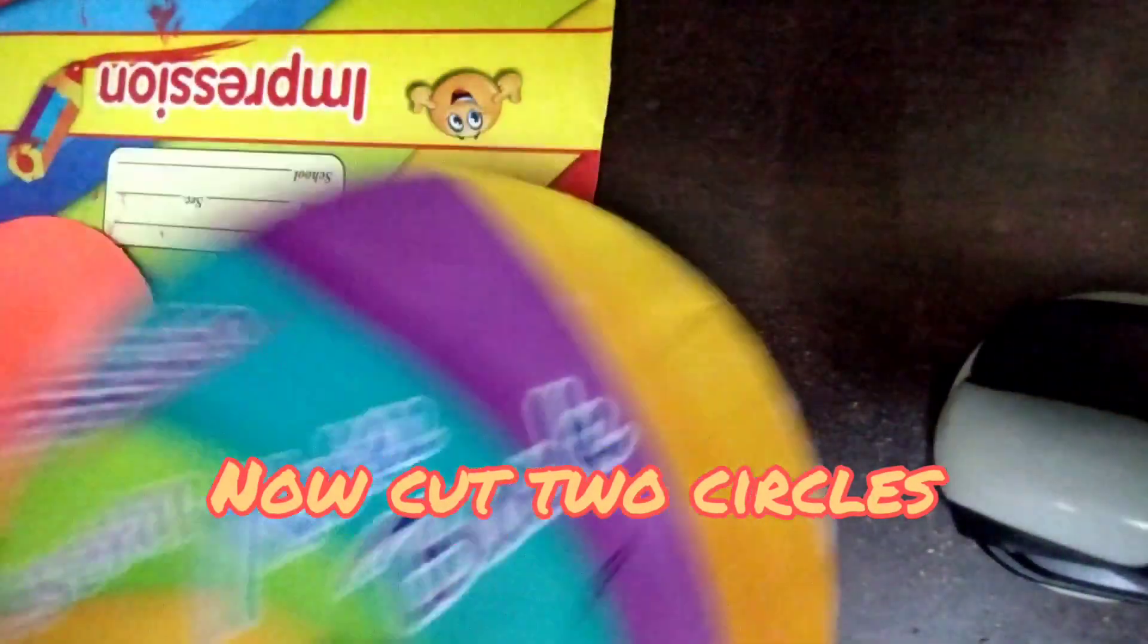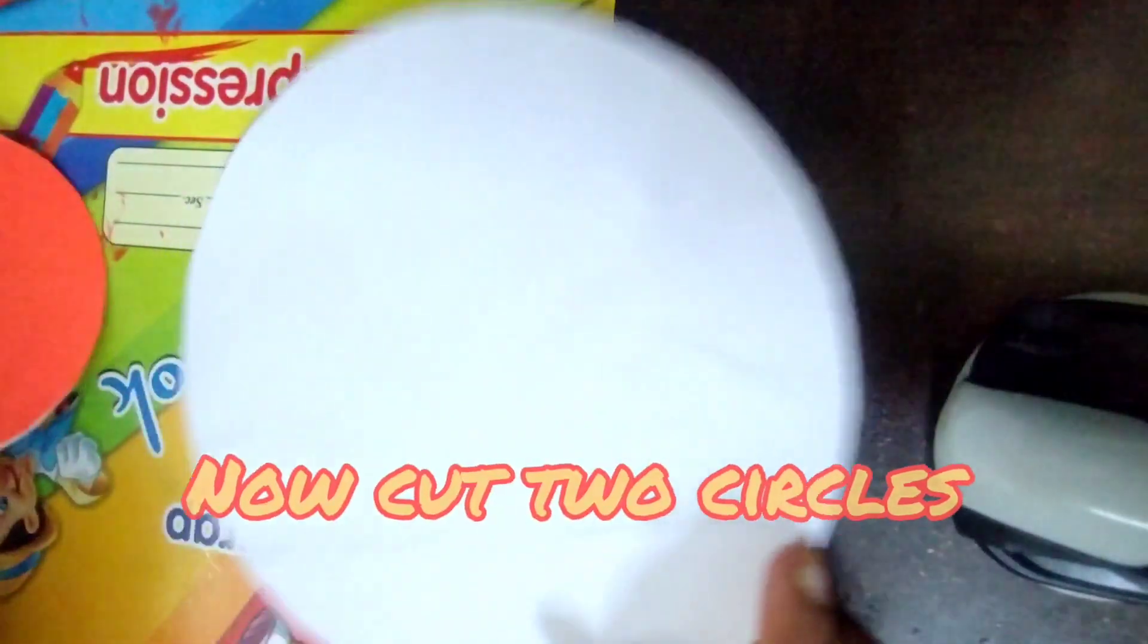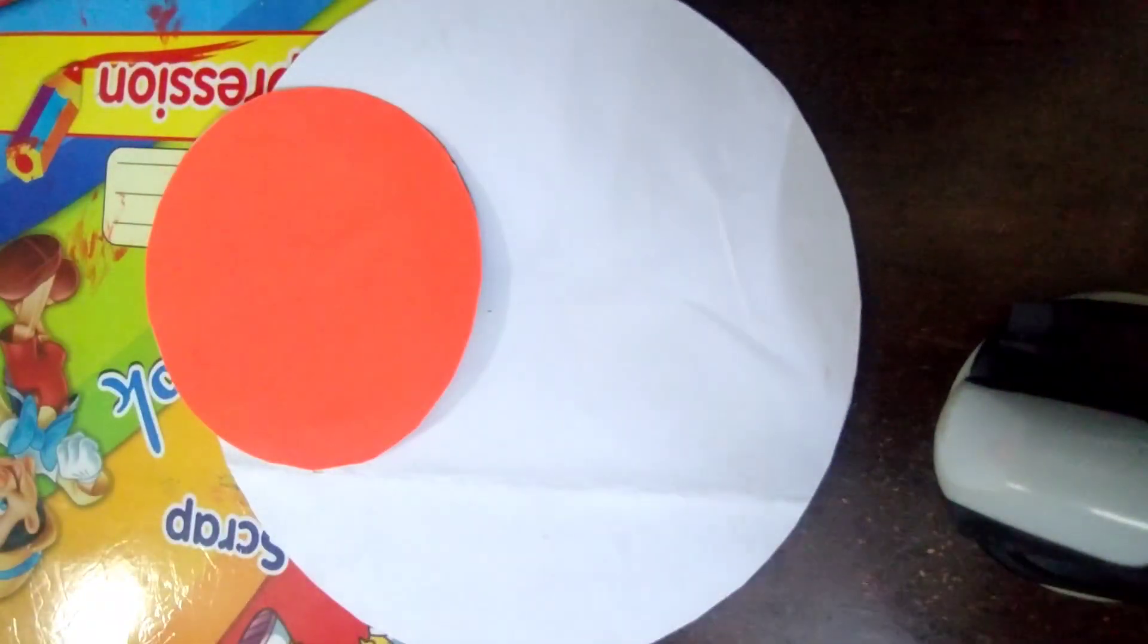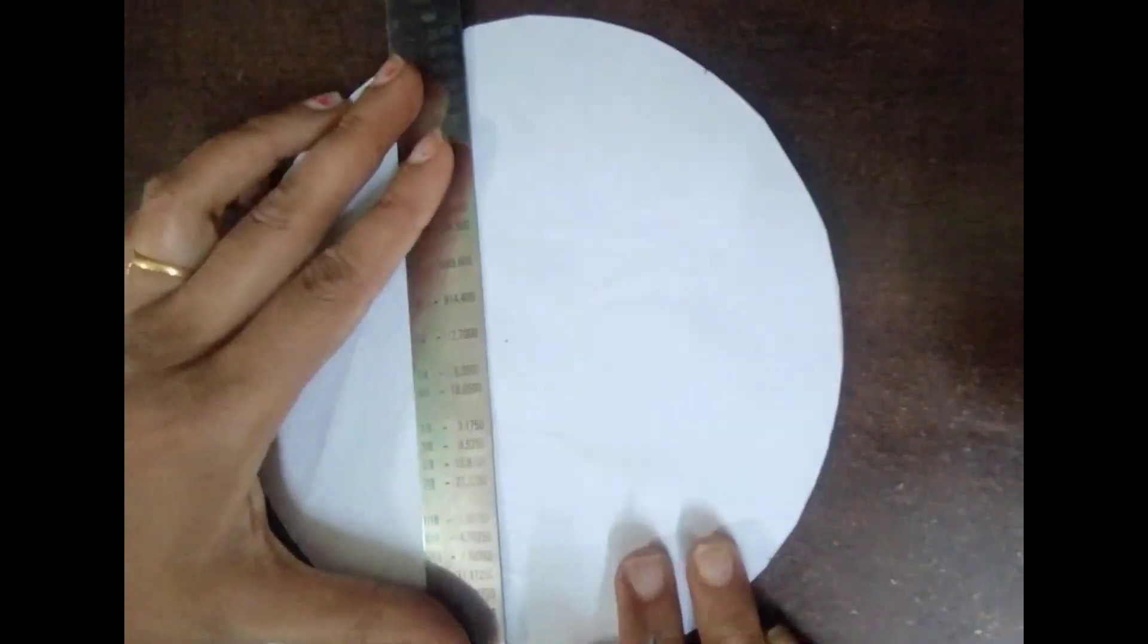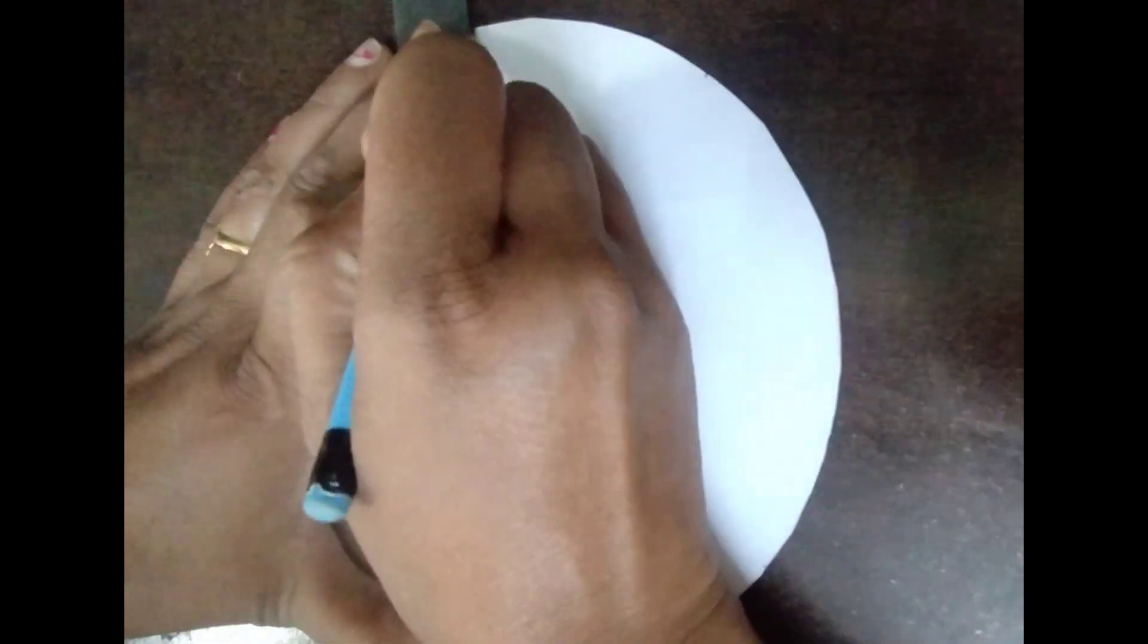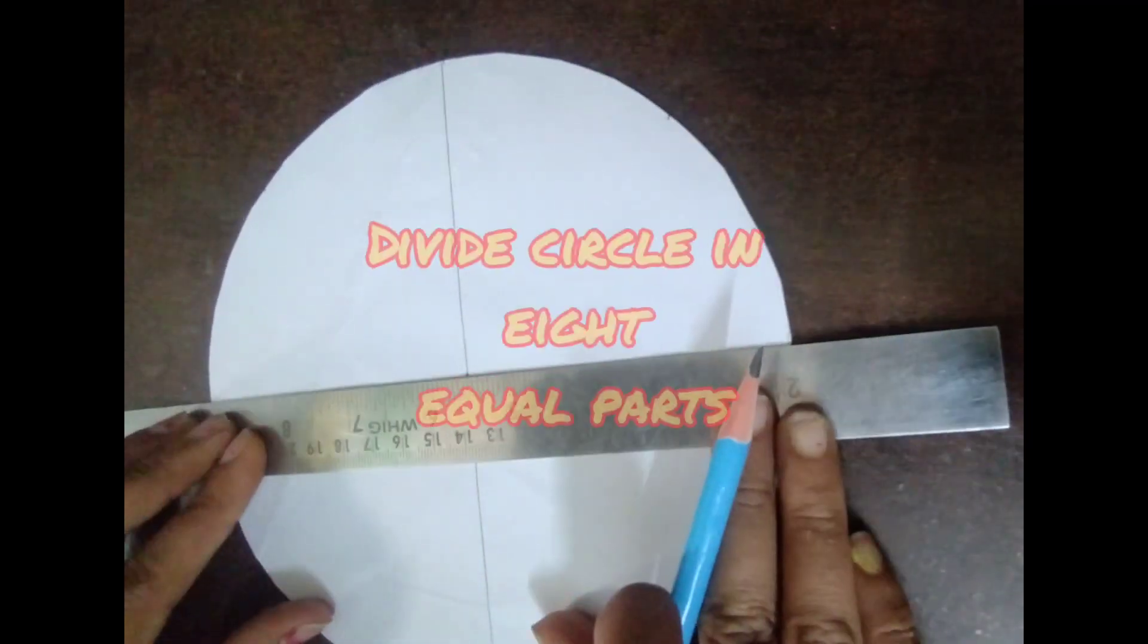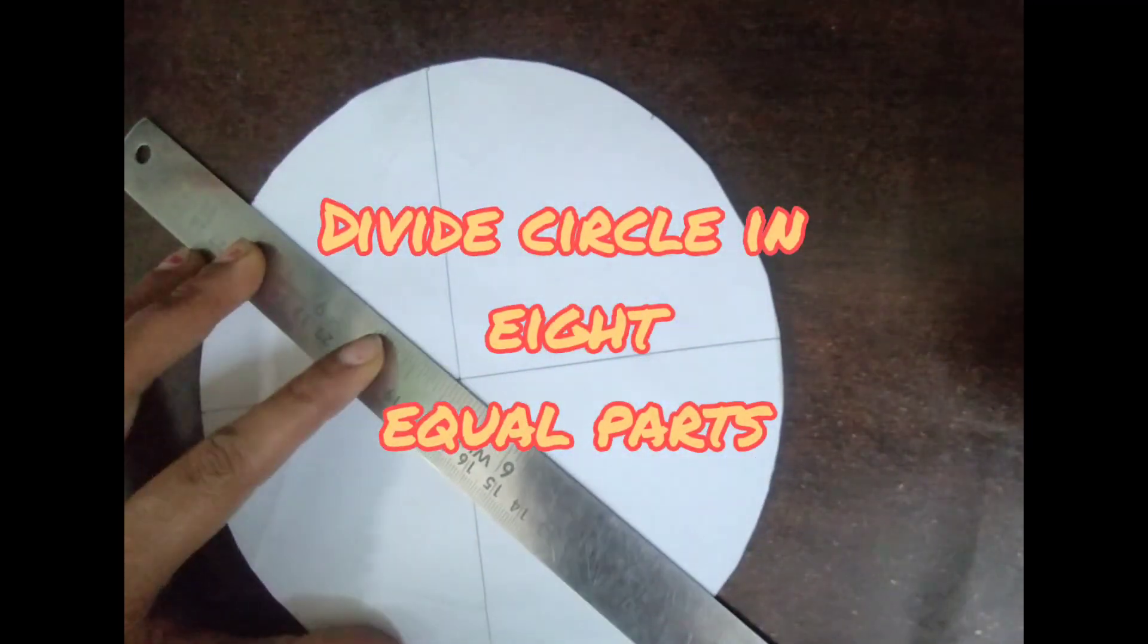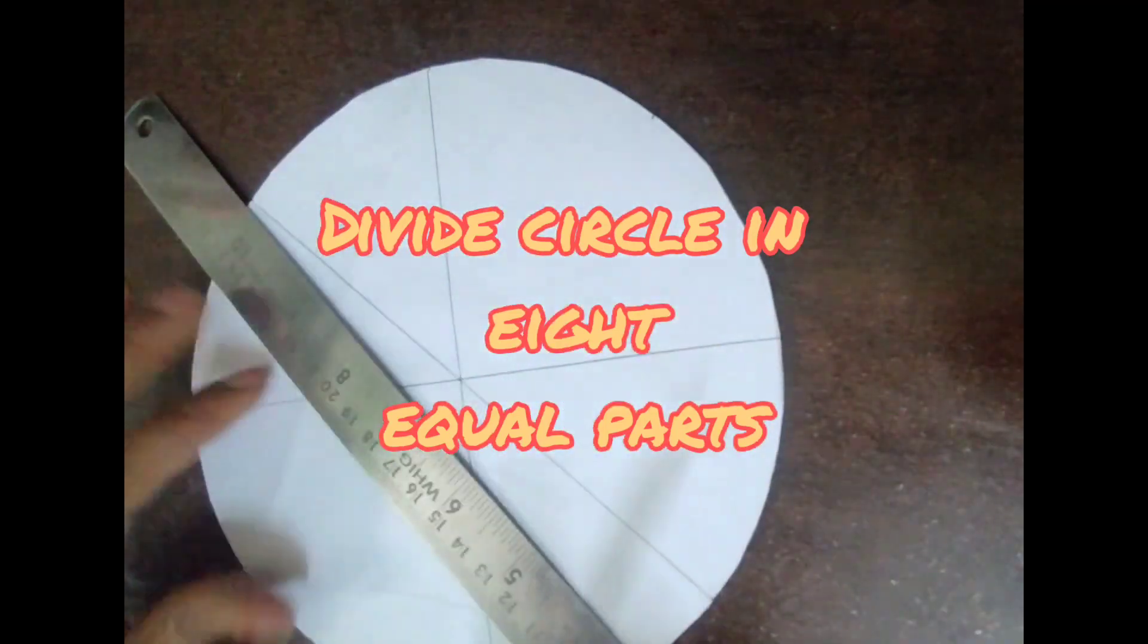Cut two circles, one big and one small in size. Divide the circle in eight equal parts.